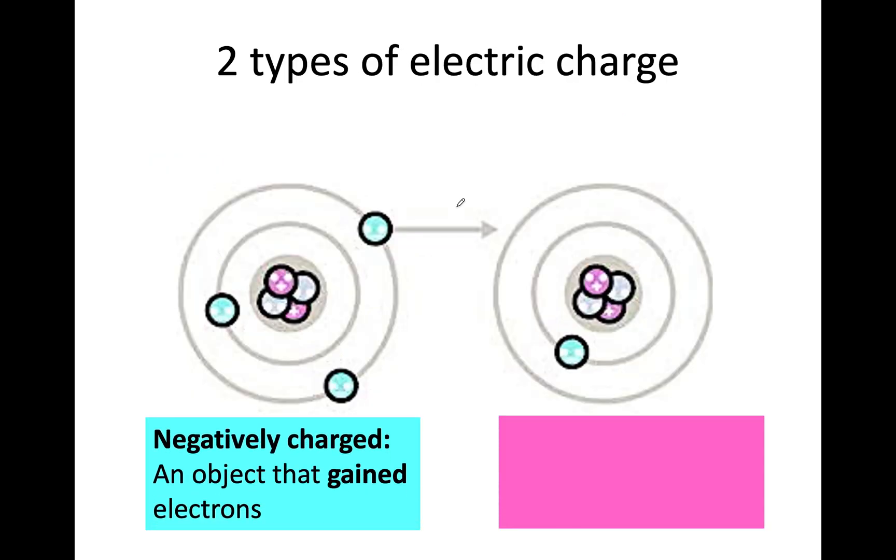So there's two charges, a negative charge if you have gained electrons, and a positive charge if you have lost electrons. Only the electrons are moving, I have to stress that. Electrons are the only things that are being gained or lost. No protons, no neutrons. They stay where they are.